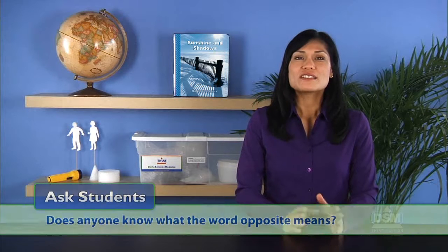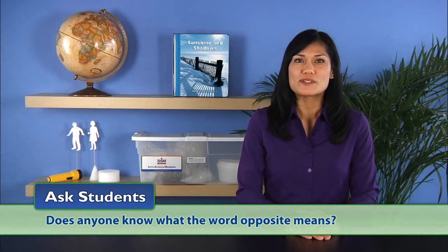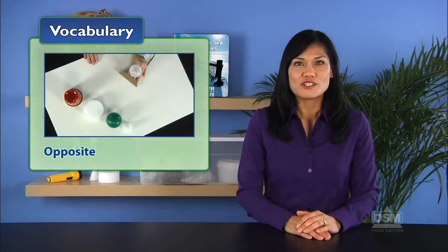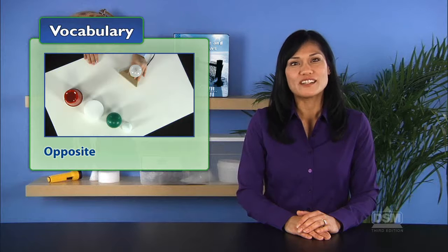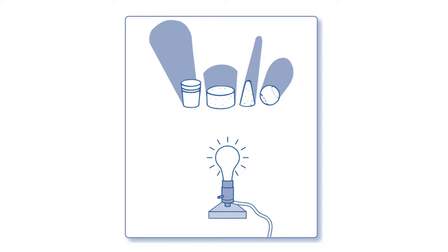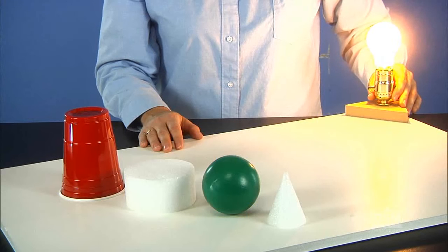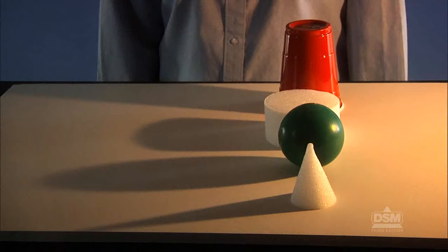Next, turn on the lights and ask students, does anyone know what the word opposite means? If they do not suggest it, inform students that opposite means across from or on the other side of. Turn the lights off again and point out that the lamps are directly across from the shadows. The lamps are on one side of the objects and the shadows fall on the other side of the objects.